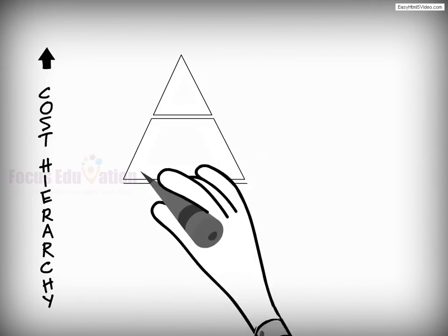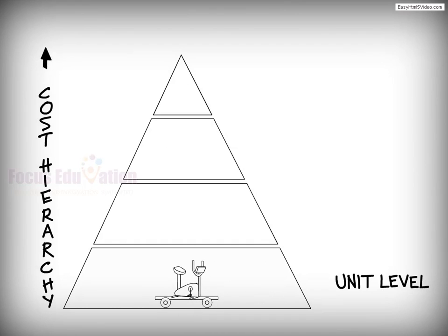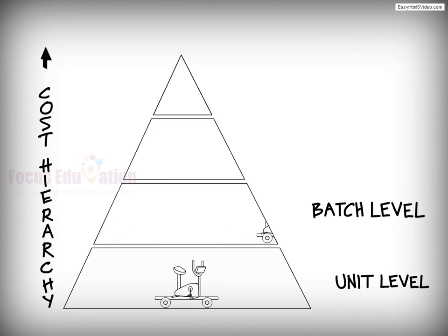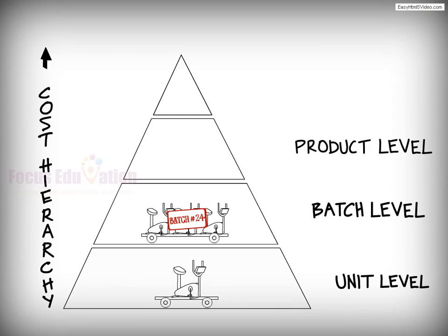This requires the managers to understand a classification system called the Cost Hierarchy to establish Activity Cost Pools. The four categories of activity costs in this hierarchy are determined by the underlying factor that drives costs. It shows the activities and costs incurred for every unit, number of units produced in a batch, for a particular product, and for facility upkeep.